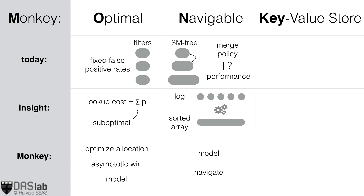Next, we observe that every existing key-value store uses a fixed merge policy, but it is unclear what the performance implications of this policy are with respect to a particular application workload and hardware. Our insight is that the merge policy can actually be set to assume any performance characteristics between those of a write-optimized log, a read-optimized sorted array, or anything in between, and so navigating the merge policy is critical for optimizing performance. Therefore, we model update costs and lookup costs with respect to the merge policy, and we use this model to find the best balance that maximizes throughput for a particular application, workload, and hardware.